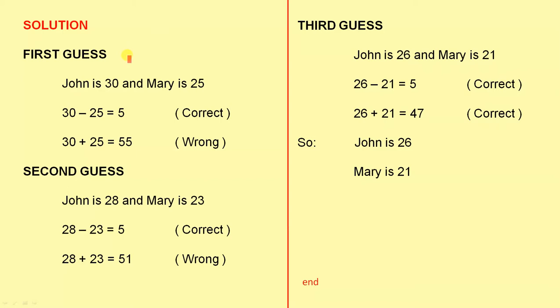For the first guess, let's guess that John is 30 and Mary is 25. 30 take away 25 is 5. That is correct because that's the difference of the ages. 30 plus 25 is 55. That is wrong because if you remember, the sum of their ages was 47.